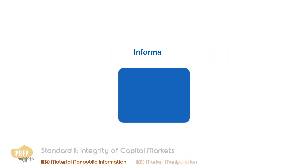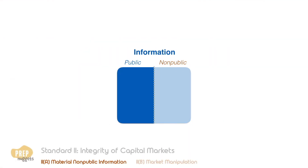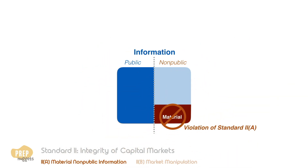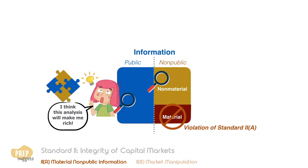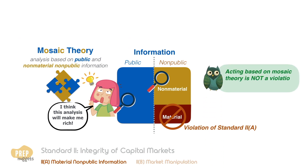In summary, information can either be public or non-public. Of the non-public information, we are clear that acting on material non-public information is a violation of Standard 2a. But what if an analyst pieces together relevant public information and/or relevant non-material non-public information, makes her own private analysis, and acts on her own conclusions? This is called mosaic theory and is not a violation of Standard 2a.